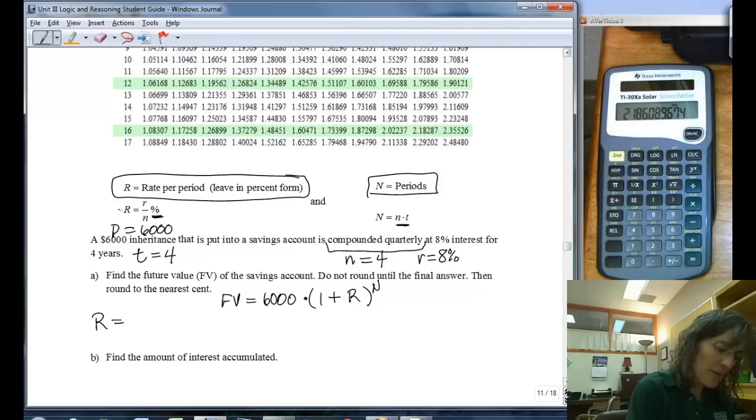So my big R, remember we have that right up here. The big R is the little r over the n, and we leave it as a percent again, so 8 over 4, so it's going to be 2%.